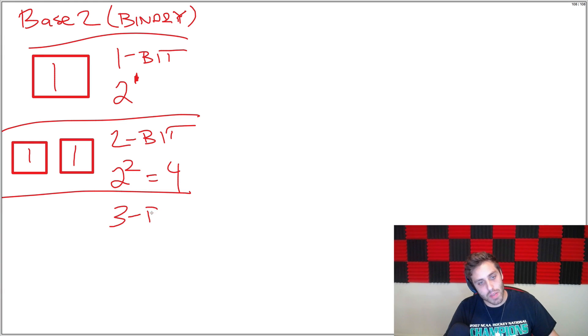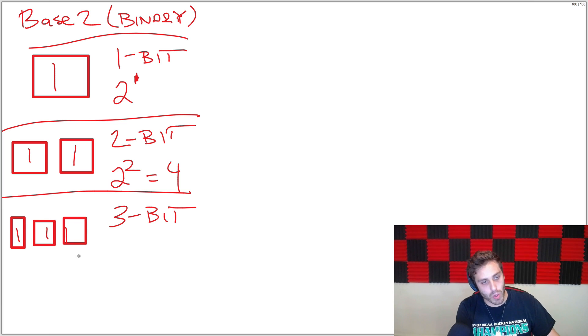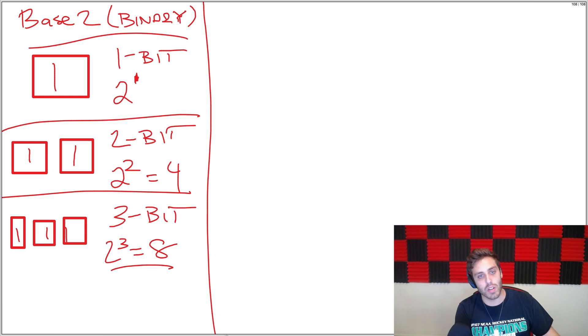This keeps going on and on, so if we look at a 3-bit number — 1, 2, 3 slots — this can go all the way up to 1-1-1, or 2 to the third power, or 8 different numbers that a 3-bit number could encode.